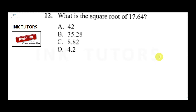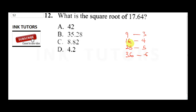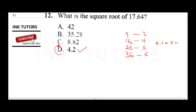Question 12 asks: what is the square root of 17.64? Since there is a decimal, it's not a perfect square directly. You need to know the perfect squares: 9, 16, 25, 36. Now 17.64 falls between 16 and 25, and it's closer to 16. Since the square root of 16 is 4, the answer should be around 4.1 or 4.2. Since it's closer to 16 than to 25, our answer is 4.2.